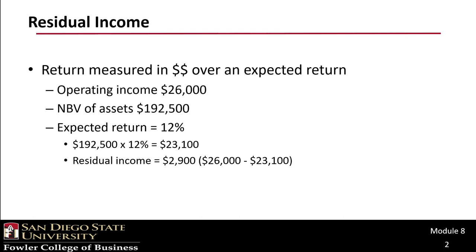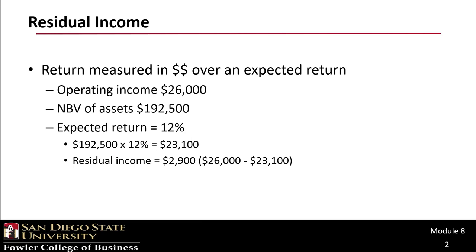Residual income represents a return that is measured over some amount in excess of the expected return. For example, if you had an operating income of $26,000, a net book value of assets of $192,500, and an expected return of 12%, you'd multiply $192,500 by 12% to get an expected return of $23,100. Since operating income was $26,000, this business activity has residual income of $2,900, which is $26,000 minus $23,100.